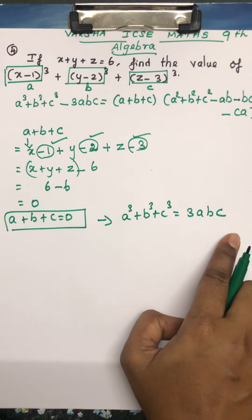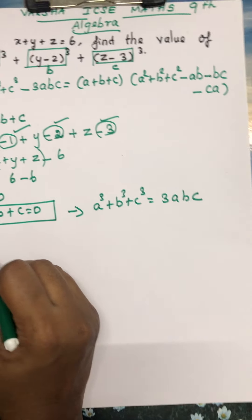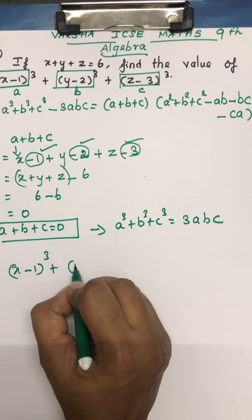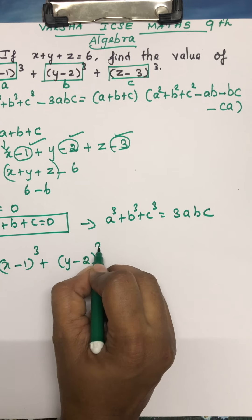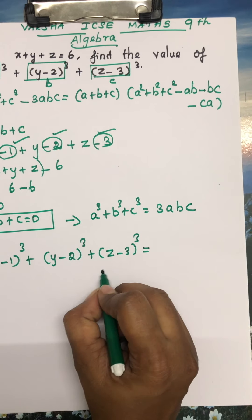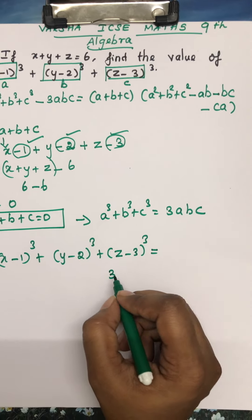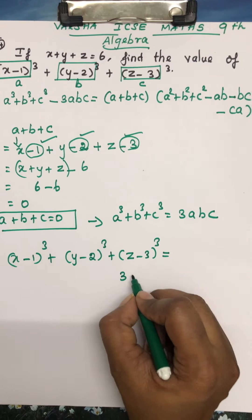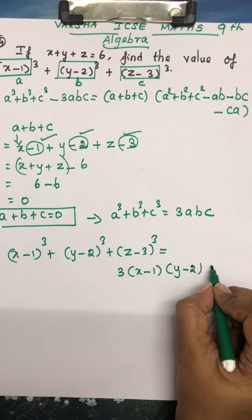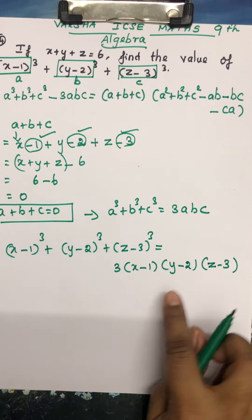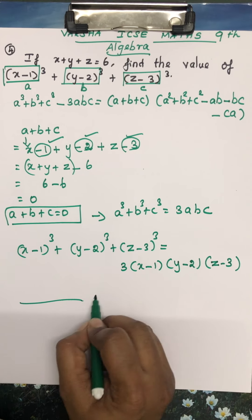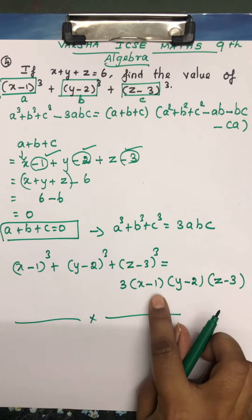So (x−1)³ + (y−2)³ + (z−3)³ = 3abc. Substituting: a = (x−1), b = (y−2), c = (z−3), the answer is 3(x−1)(y−2)(z−3). This is the final right answer.